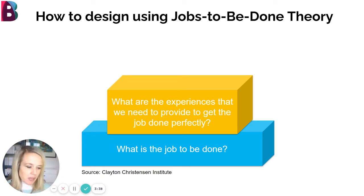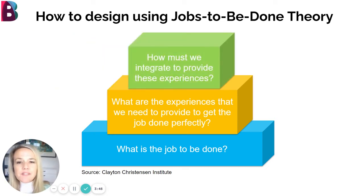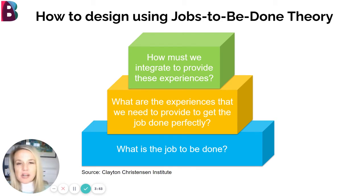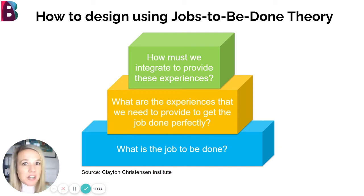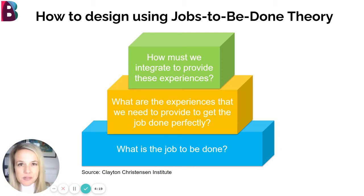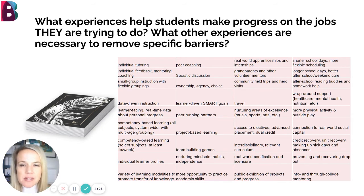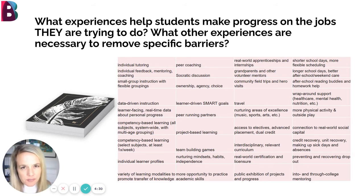With the milkshake, it was: we need thicker milkshakes and we need them to be really accessible quickly so people can grab them and get back in their car. And then finally, how must we integrate to provide those experiences? With the milkshake, we need to buy ingredients for thicker milkshakes, order different cups, bigger straws, and so forth. That same process works in schools — after identifying the job to be done, we think about what experiences we need to provide to help students get that job done perfectly, and then how we need to change curriculum, staffing, facilities, and schedules to help us deliver those experiences really well.